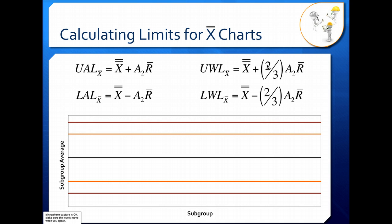And our warning limits were set at two times our standard error. Our A2 and our R-bar term basically is three times our standard error. So that's why we're multiplying two-thirds to get down to the warning limit from the action limit.